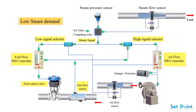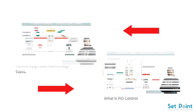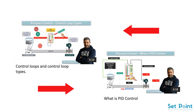This control system maintains the air-fuel ratio and prevents incomplete combustion of fuel with changing steam demands. For more technical details on control loop types, you may review my previous videos, with links left in the description box below.